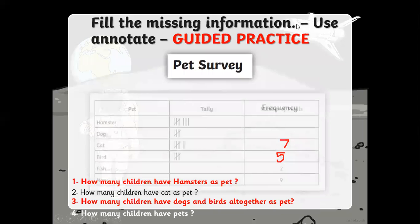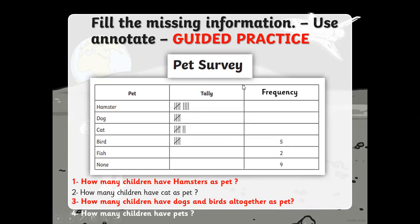Now here I have a frequency table with some information missing. I want you to fill in the missing information. The tally marks are given, so you count them and write the frequency. For example, the first one shows five and four, so the frequency for hamster is nine. This is a pet survey of a classroom — nine students have a hamster as a pet.